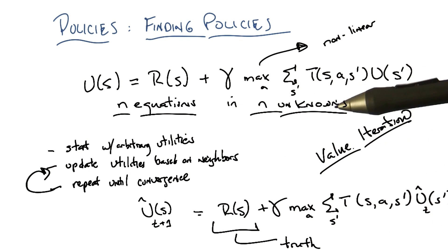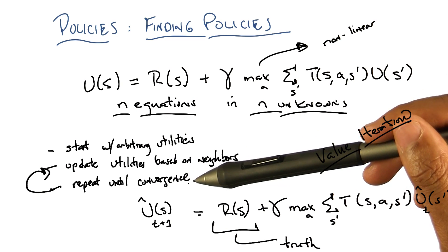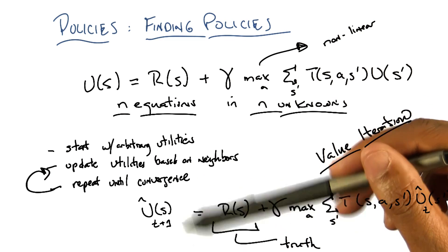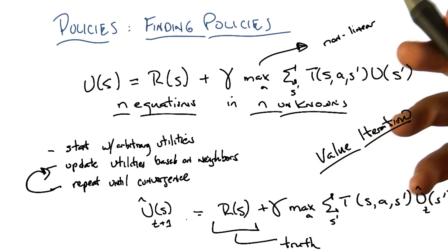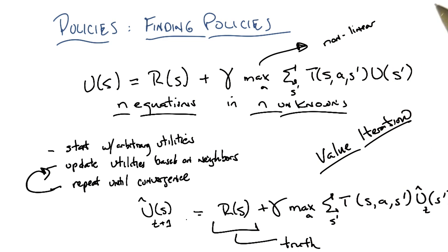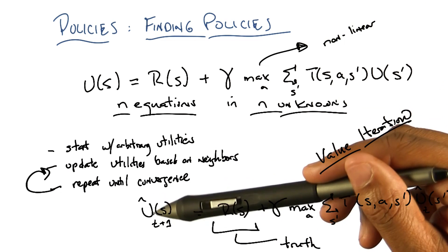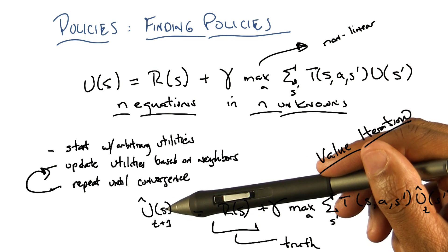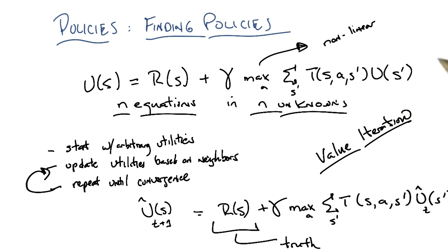Value iteration doesn't give you the answer directly, but it gets you something closer and closer to the answer, and eventually it'll converge — or get so close to converging it doesn't matter. And once you have the true utilities, we know how to define the optimal policy in terms of those utilities. If I give you the utilities, the optimal policy is just: I'm in a state, look at all the states I might get to, figure out the expectation for a given action, pick whichever one is maximum, and I'm done. So solving for the utilities — the true value of a state — is effectively the same thing as solving for the optimal policy.